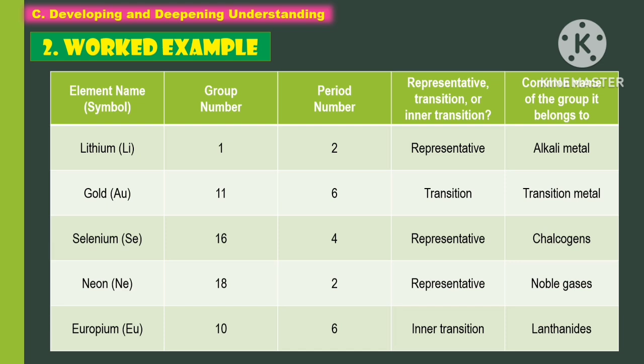Another element is neon. It has a group number of 18, period number of 2, and it is a representative belonging to the noble gases. The last element is europium. It has a group number of 10, period number of 6, and it belongs to inner transition, specifically the lanthanides.